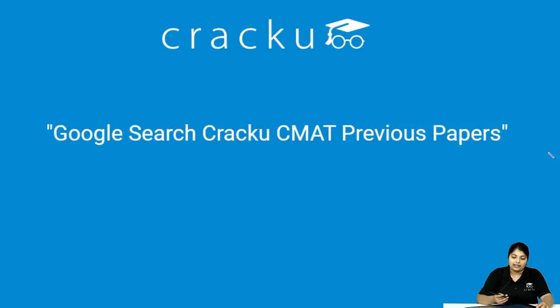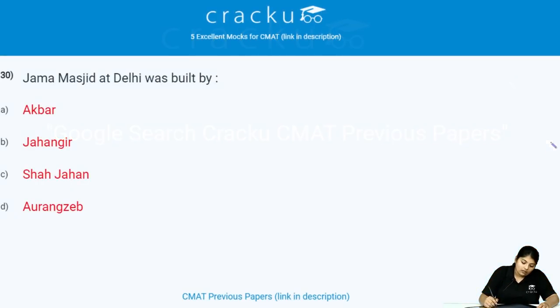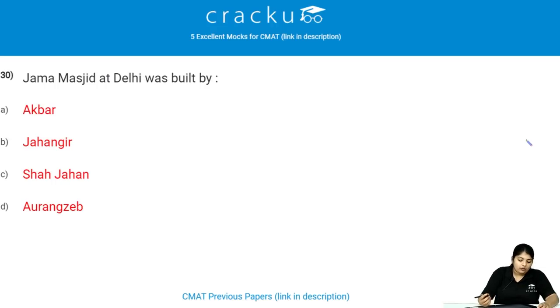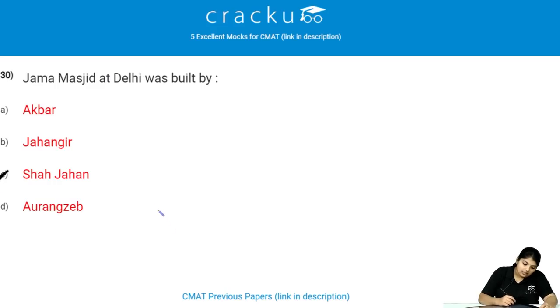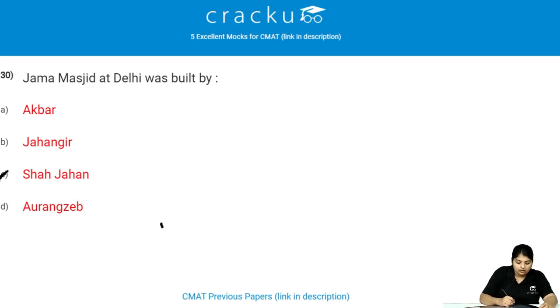Jama Masjid at Delhi was built by whom? Jama Masjid at Delhi was built by Shah Jahan. It can also be called the replica of Moti Masjid in Agra.